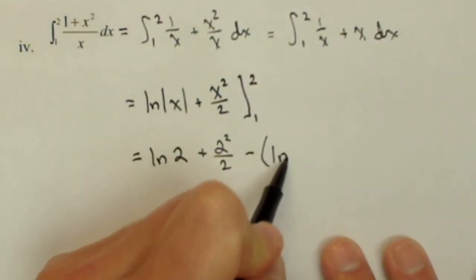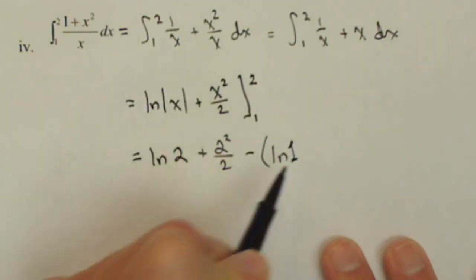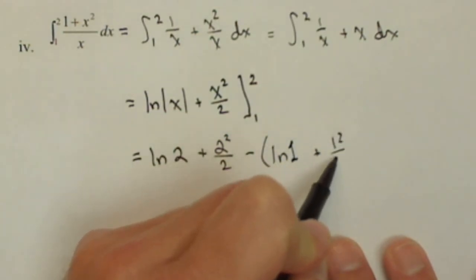I always like to use parentheses around the second part so I don't make a mistake with any negatives. ln of one—so that's the number one, not an absolute value sign—plus one squared over two.